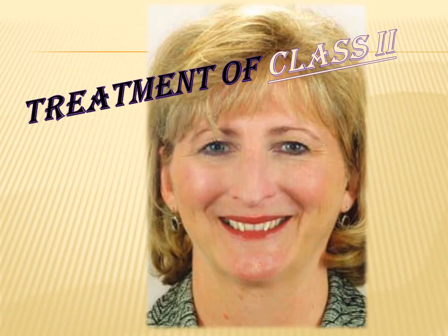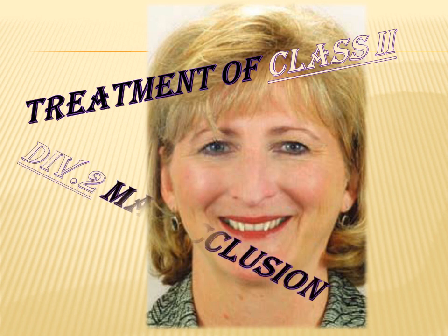As we said about Class 2 Malocclusion, it can be divided into two main types: either Class 2 Division 1 or Class 2 Division 2 Malocclusion, depending on the incisor inclination. When the upper incisors are inclined forward it is called Class 2 Division 1, and when they are inclined backward it leads to Class 2 Division 2 Malocclusion.